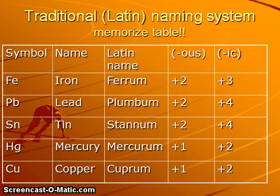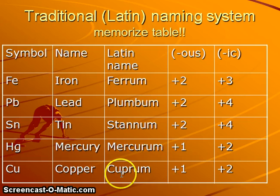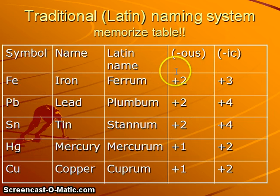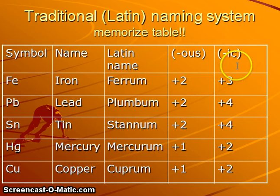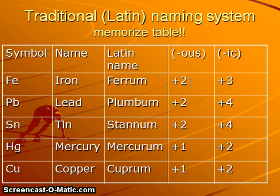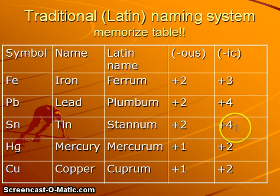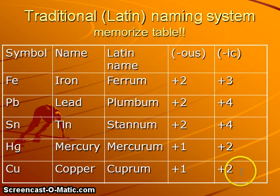The traditional Latin naming system is based on the Latin names for many elements: ferrum for iron, plumbum for lead, stannum for tin, mercurum for mercury, cuprum for copper, aurum for gold. GTChem students should memorize these five. The -us ending always tells us the smaller of the two possible charges; the -ic ending tells us the higher. So iron plus two is ferrous, iron plus three is ferric. Lead plus two is plumbous, lead plus four is plumbic. Tin plus two is stannous, tin plus four is stannic. Mercury plus one is mercurous, mercury plus two is mercuric. Copper plus one is cuprous, copper plus two is cupric.